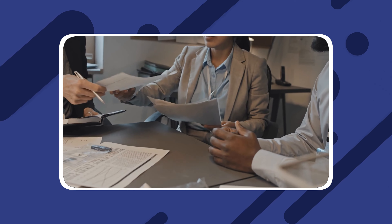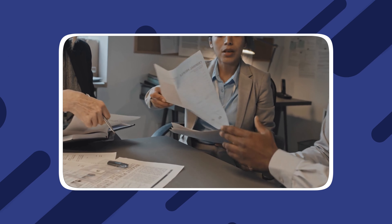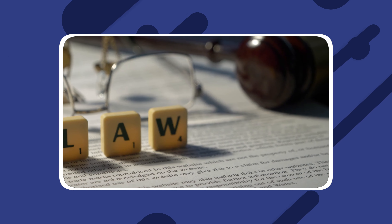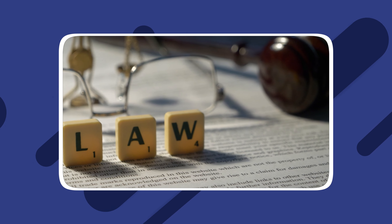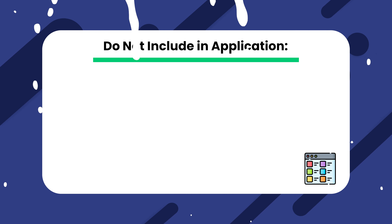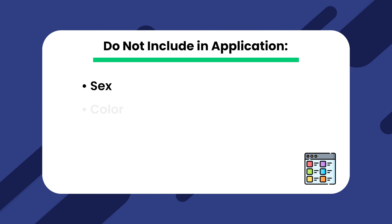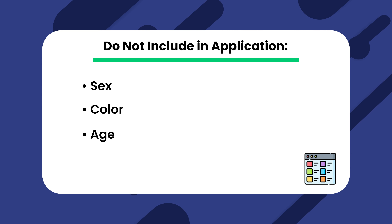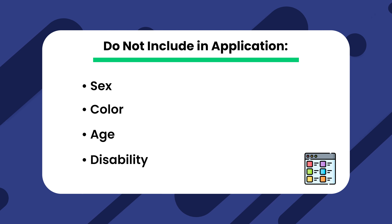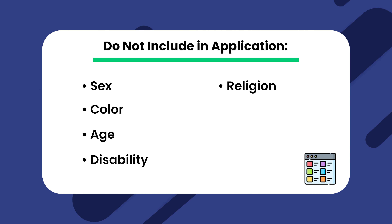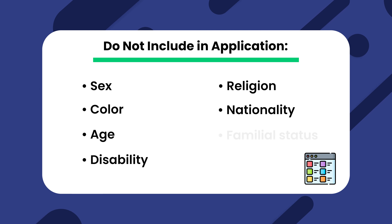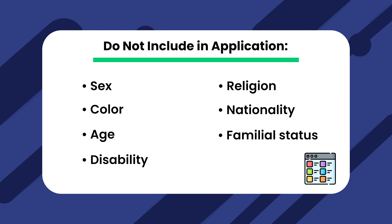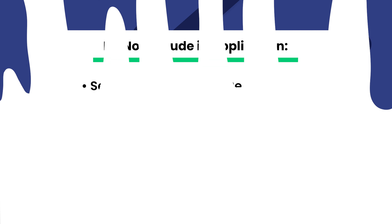There are items you should not include in your rental application. These items fall under the Fair Housing Act, which makes it illegal to discriminate against potential tenants. These include sex, color, age, disability, religion, nationality, familial status, and race.